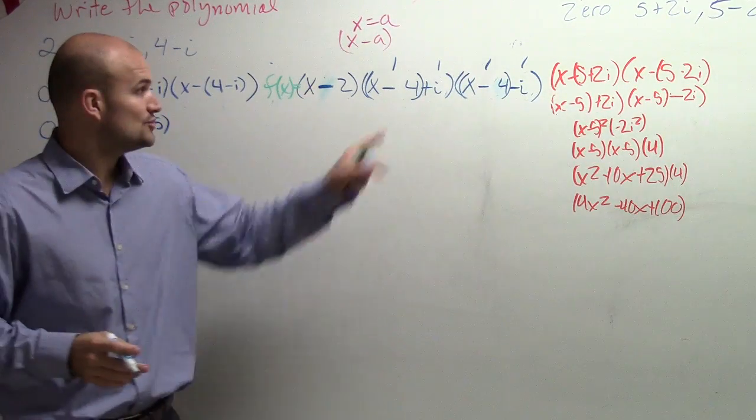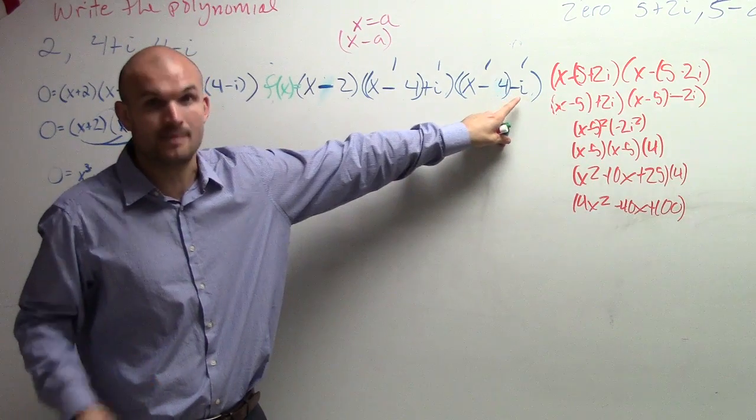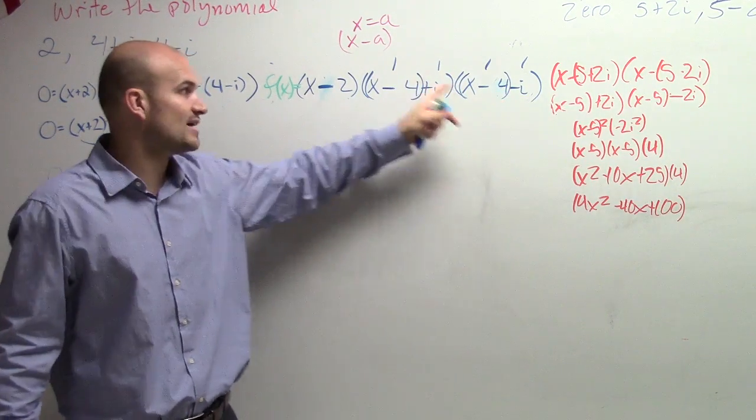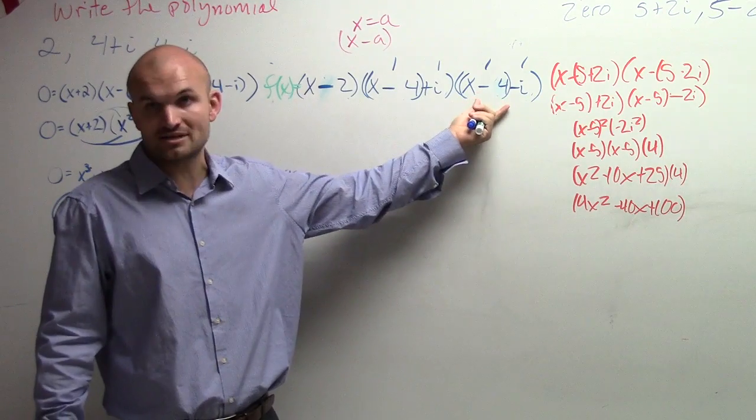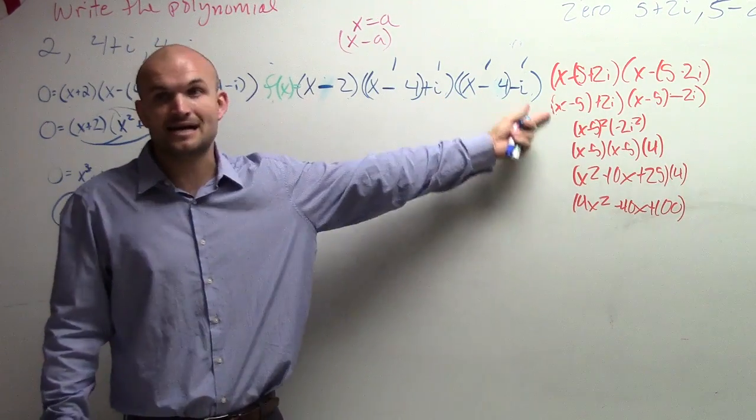Are my last two terms the same? i and i. Yes. Do they have a difference of signs between them? Yes. Now I can use difference of two squares where I only multiply x minus 4 times x minus 4 and i times negative i.